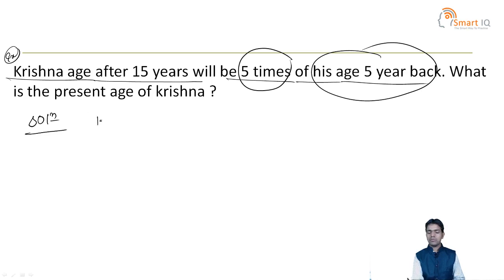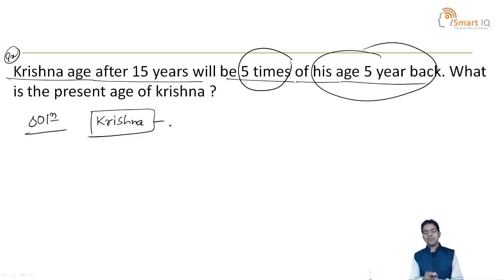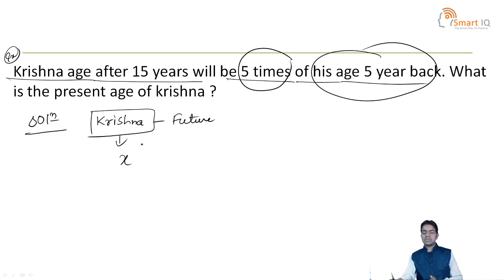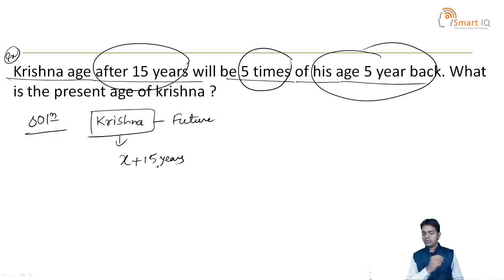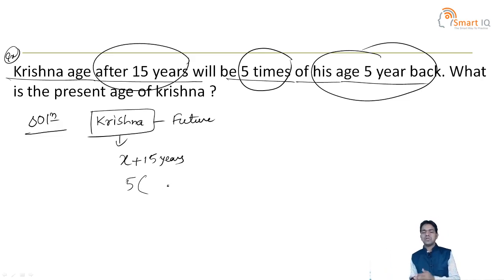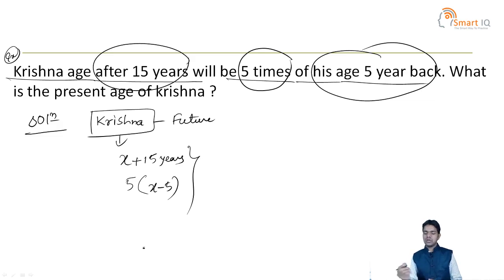Here, the person is Krishna. Let Krishna's present age be X years. 'After' means future, so Krishna's age after 15 years is X plus 15. Then, five times of five years back — 'back' means past — that is X minus 5. So the equation from the given data is: X plus 15 is equal to 5 into X minus 5.